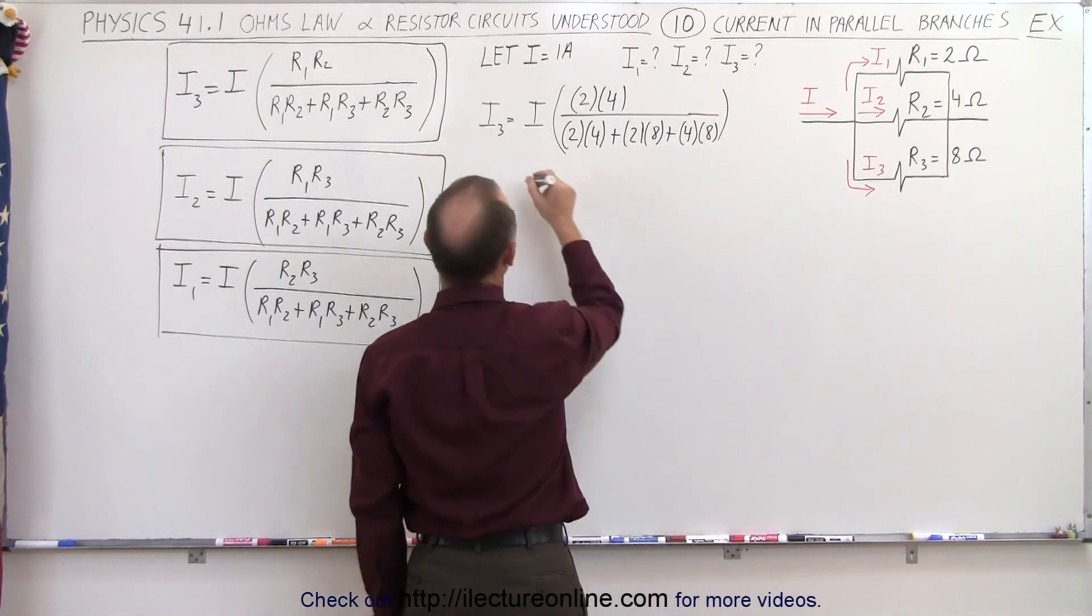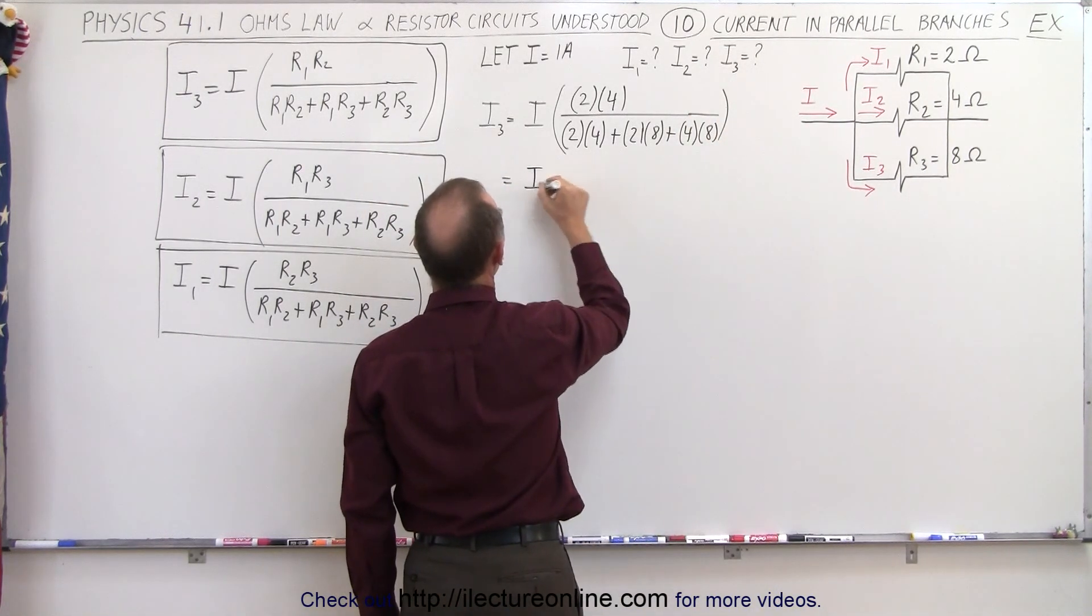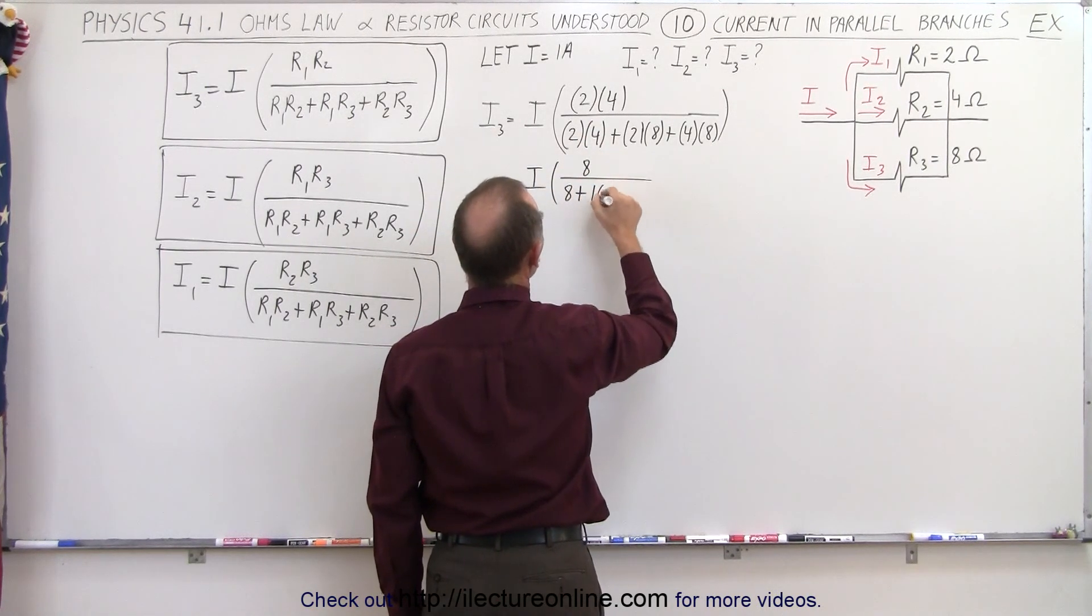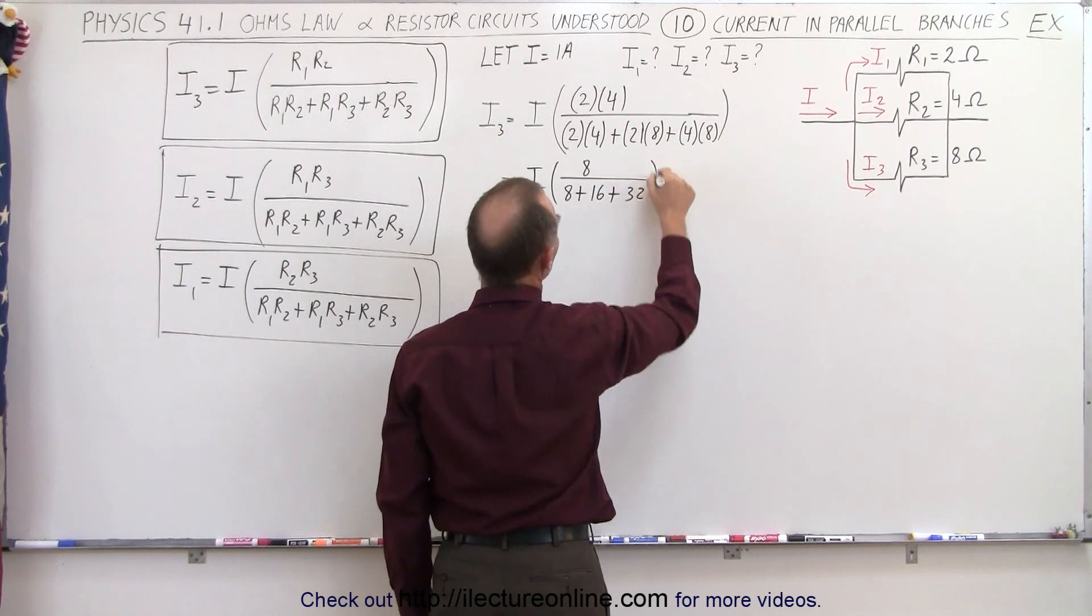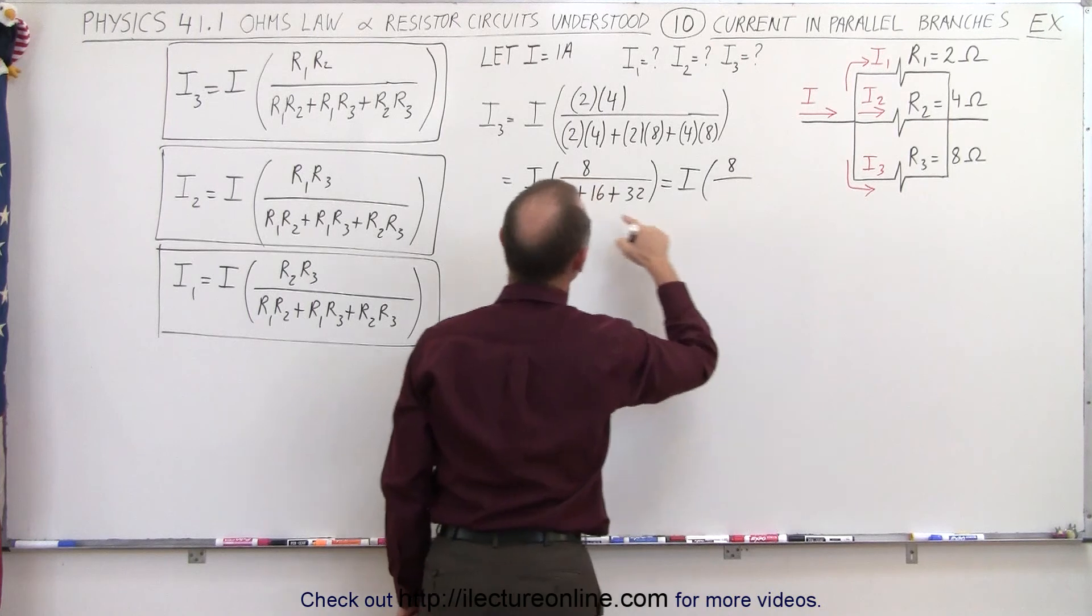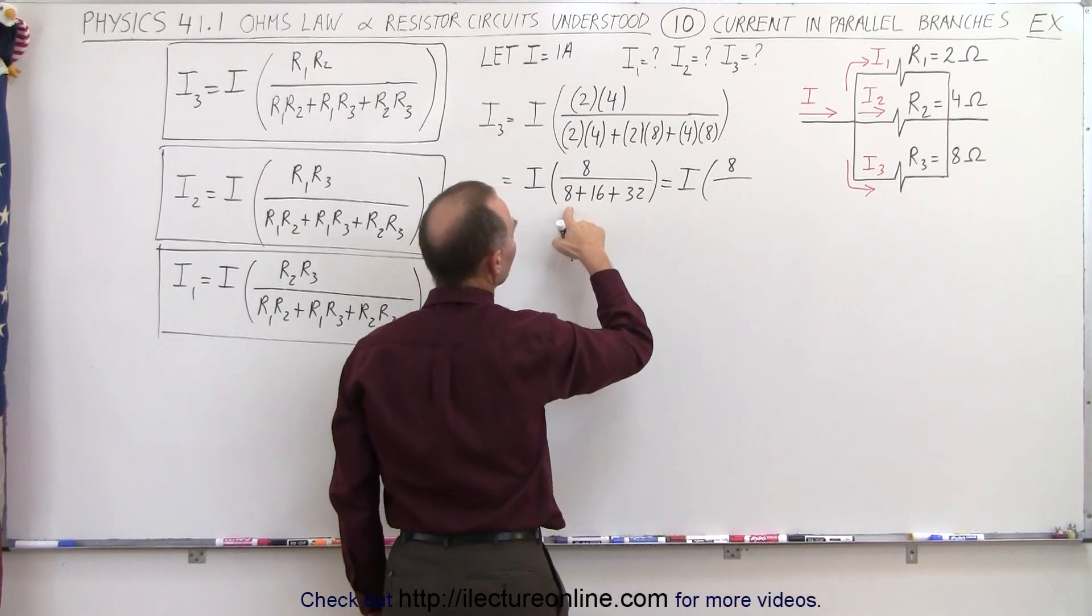And if we then simplify that, we get I times, in the numerator we get 8, in the denominator we get 8 plus 16 plus 32, which is equal to I times 8 over 56.